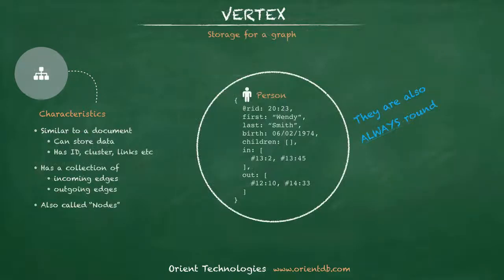A vertex is a storage container in a graph database. Some will refer to vertices as nodes. A vertex is similar to a document in that it can contain properties and be queried. In addition, a vertex has a list of incoming and outgoing edges, which are relationships to other vertices in the graph.